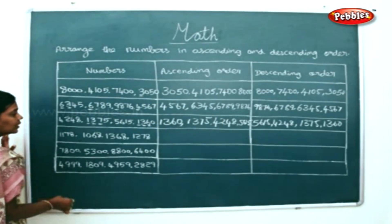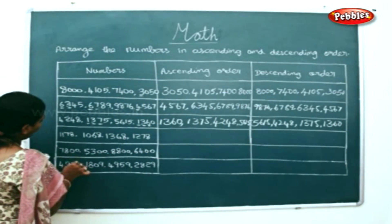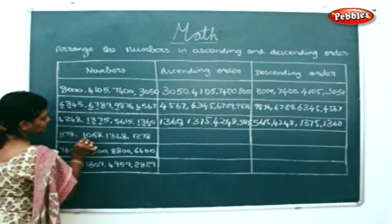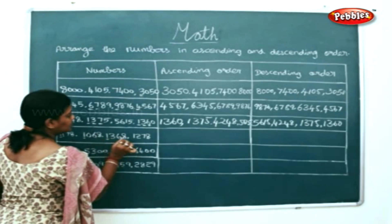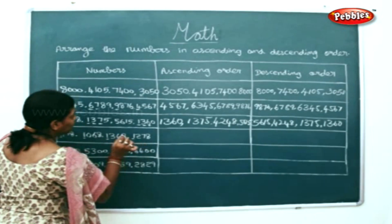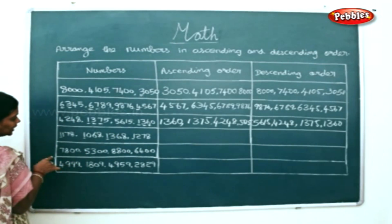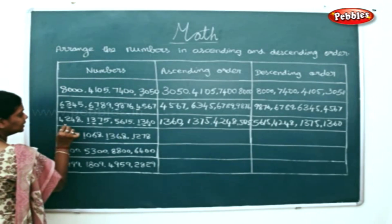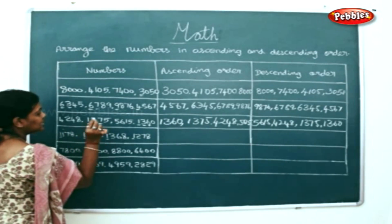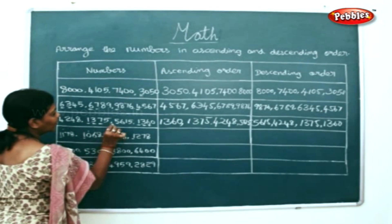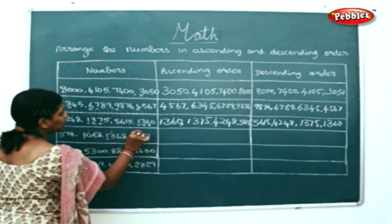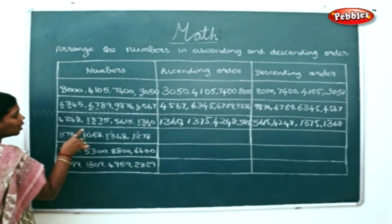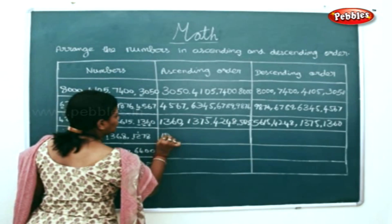Now, this sum — you have all 1's in the thousands places. Now, what must we do? We must check the hundreds places. Hundreds: you have 1 here, you have 0 here, you have 3 here, you have 2 here. Which is the lowest number? 1, 0, 6, 8.